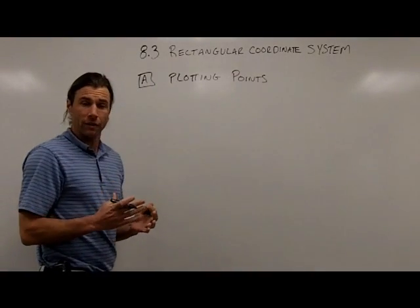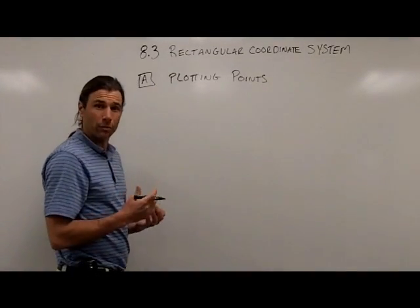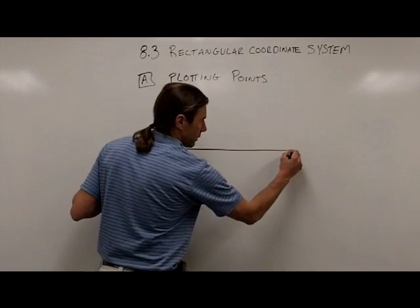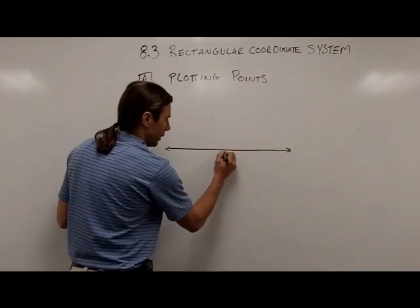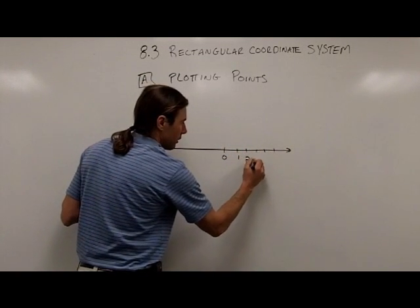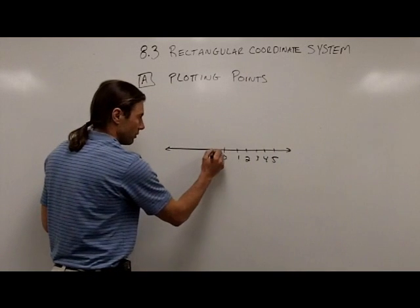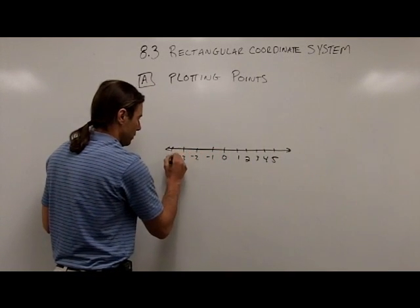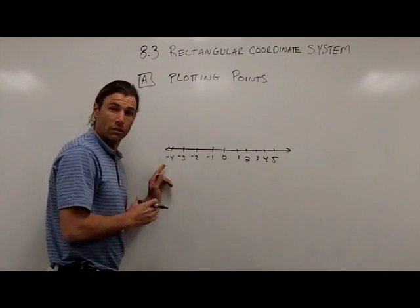We've already worked with graphing in this class. We've already dealt with graphing with a number line. So if I draw a number line, we have 0 in the middle, positive numbers to the right, negative numbers to the left.